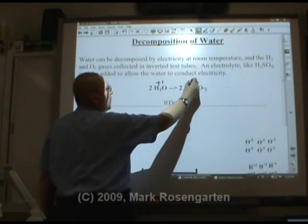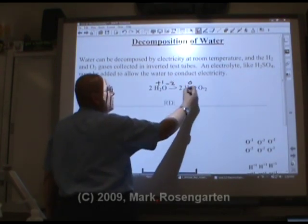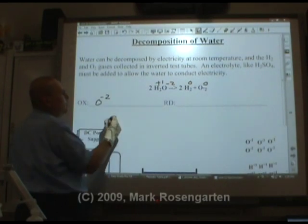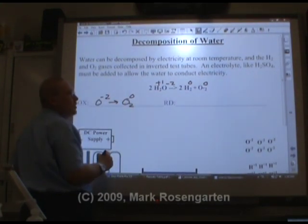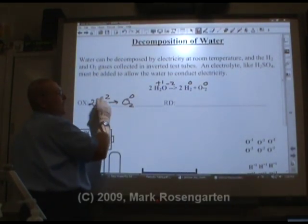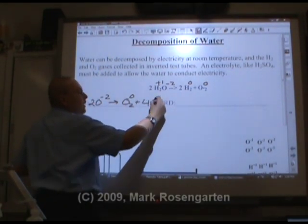The hydrogen is going from plus one to zero. The oxygen is going from minus two to zero. So the oxygen, O minus two, is being oxidized to form diatomic oxygen. Balance the Brinkelhoff. Two times minus two is minus four, so four electrons are lost.